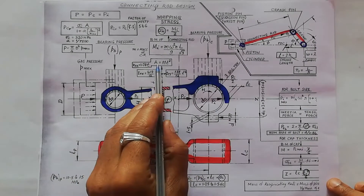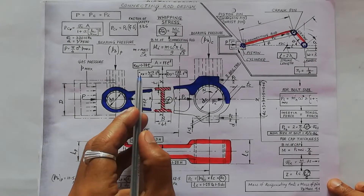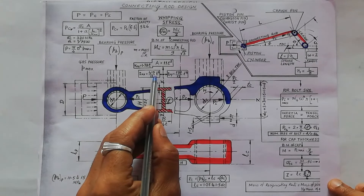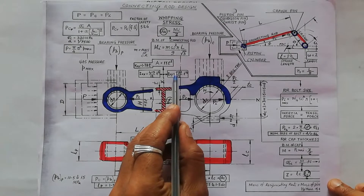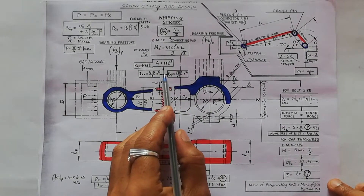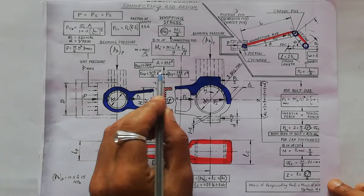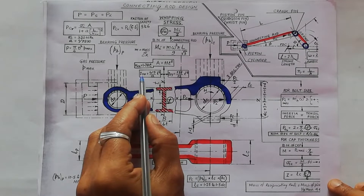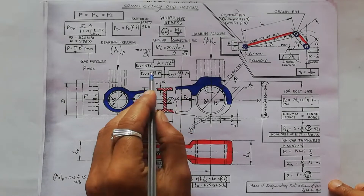For the I-section, the area is taken as 11 into t squared. The moment of inertia about the x-axis is 419 divided by 12 into t to the power of 4, and the moment of inertia about the y-axis is 131 divided by 12 into t to the power of 4. There is a ratio condition for these two values.